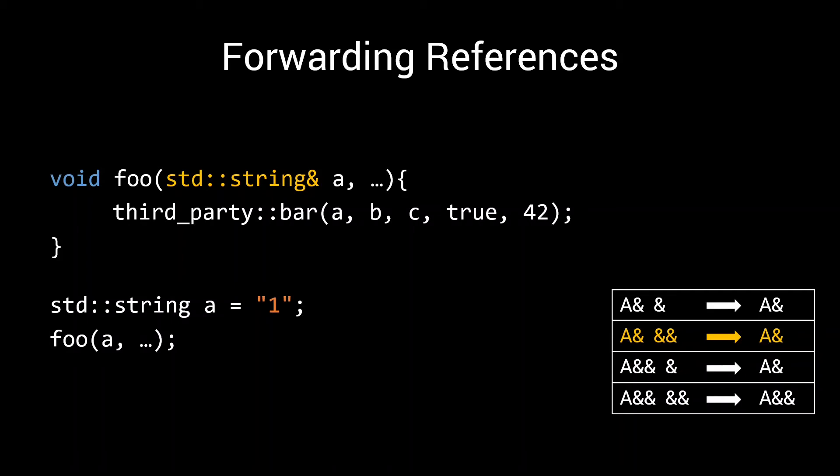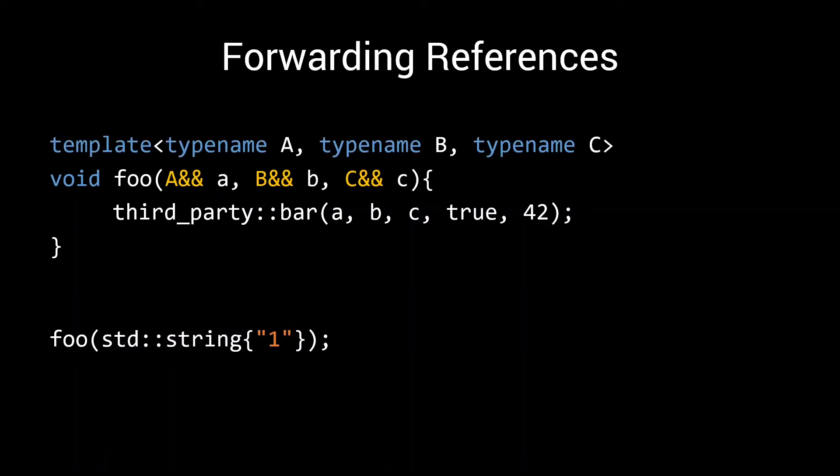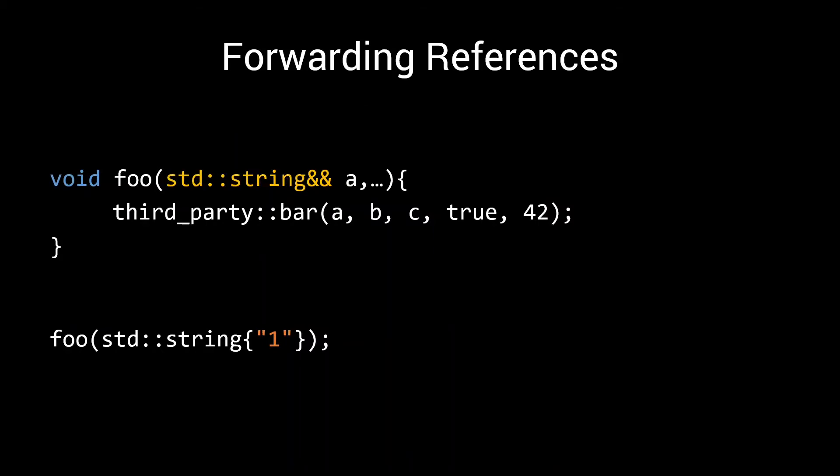If, on the other hand, I call my foo with an r-value string, in that case, the type the compiler deduces for our big A is just a normal string. Again I'll leave the details of type deduction for a future video. But as a result, when putting this together, the type of our little a becomes an r-value reference to string.